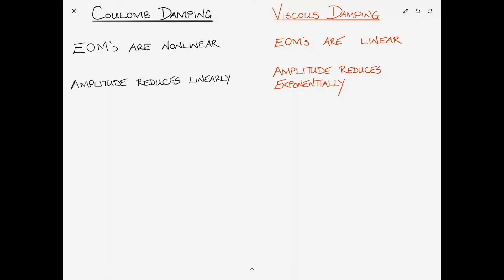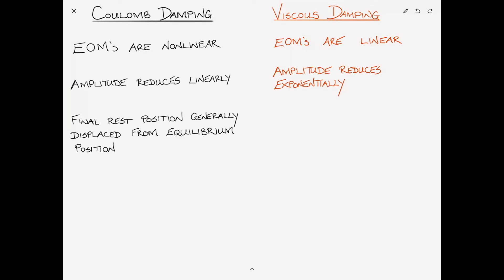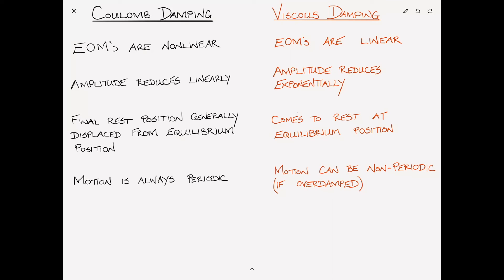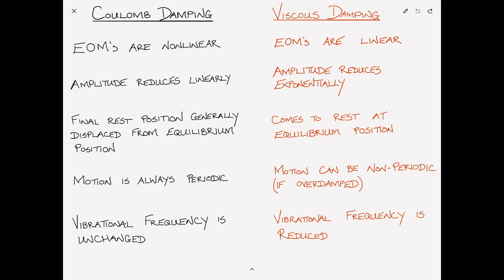Another difference is that the final rest position is generally displaced from the equilibrium in Coulomb damping, while in viscous damping the system comes to rest at equilibrium. In Coulomb damping the motion is always periodic, whereas viscous damping can produce pure exponential decay in an overdamped system with no oscillation. Finally, in Coulomb damping the vibrational frequency remains unchanged, which is significant — in viscous damping, damping reduces the vibrational frequency.